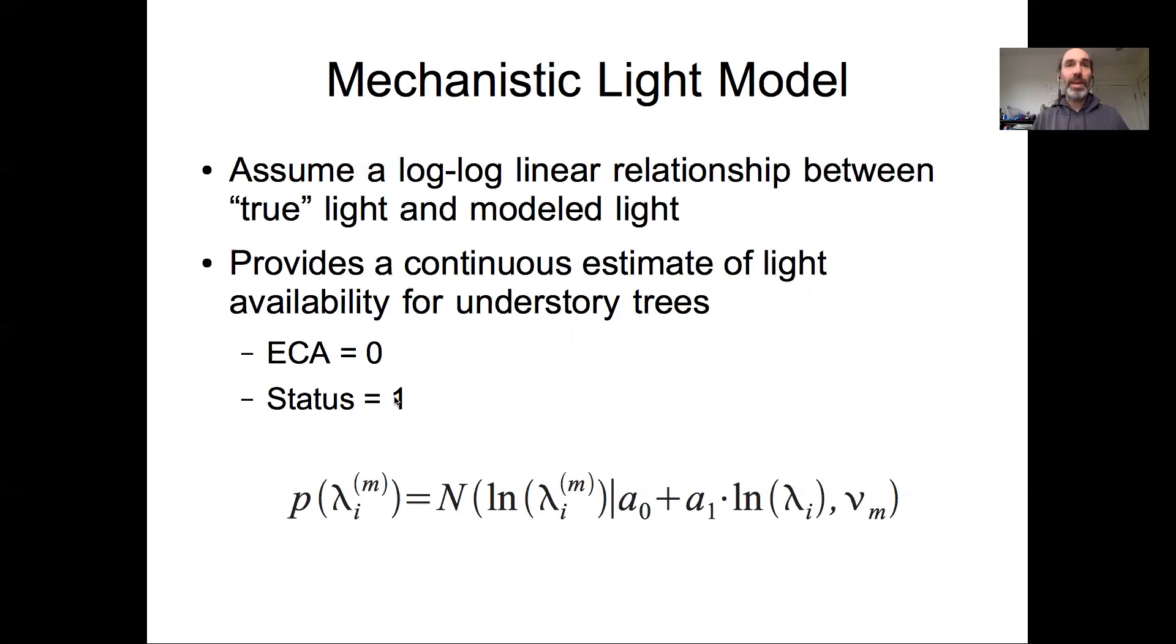So in the understory, we have an exposed canopy area in the remote sensing of zero. We have a status that's just a categorical variable, so we can't really tell understory trees apart. But the mechanistic model actually helps us do that because we get estimates of light for all of the understory trees.